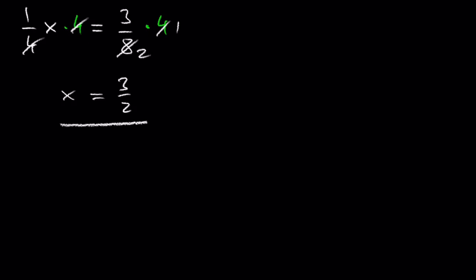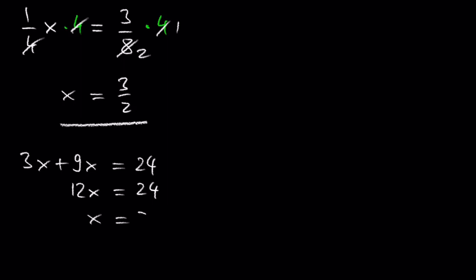What if we have an equation like 3x plus 9x is equal to 24? In cases like this we have to first simplify the equation by combining the like terms so there is only one variable term on the left side. 3x plus 9x is 12x, so 12x is equal to 24. Dividing by 12 on both sides gives x is equal to 2. The solution is 2.